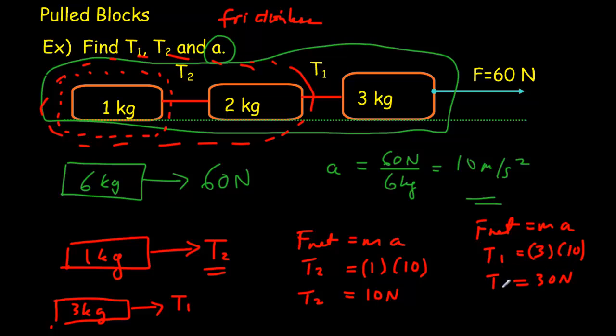So we end up with a situation that kind of makes sense. 60 Newtons, that's pulling all the weights, which is bigger than T1, which is only pulling 2 of the weights, which is bigger than T2, which is only pulling the one weight.